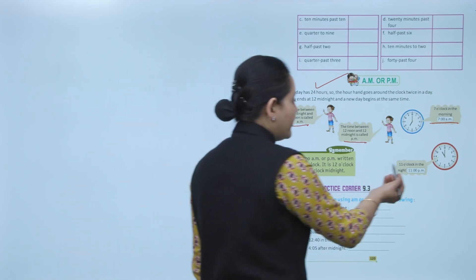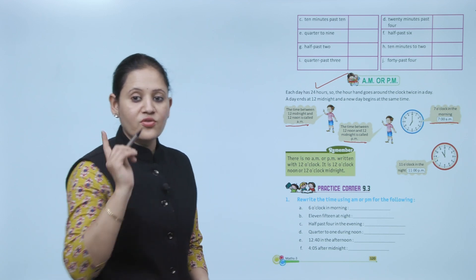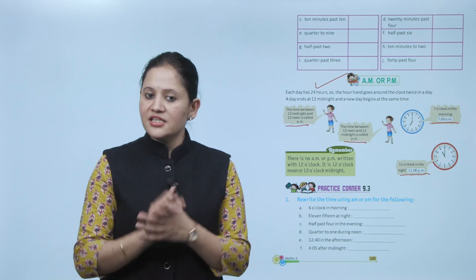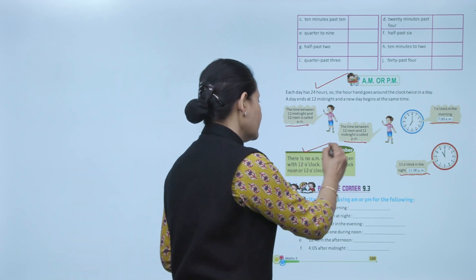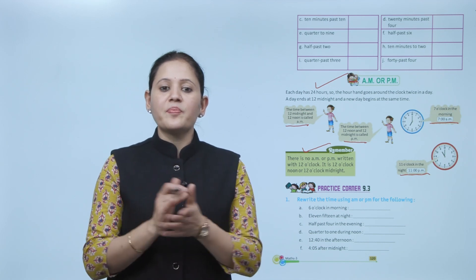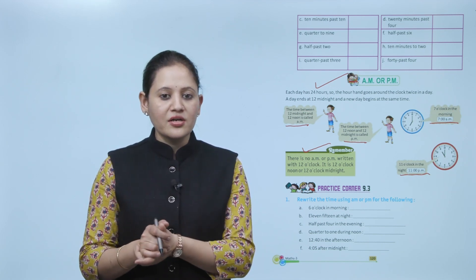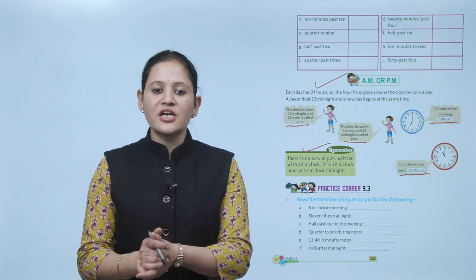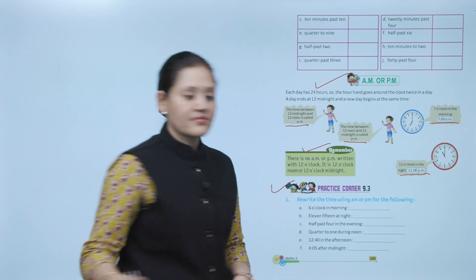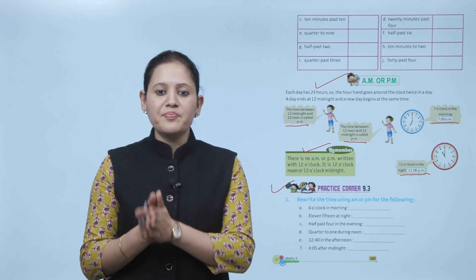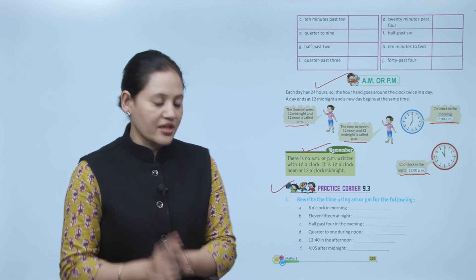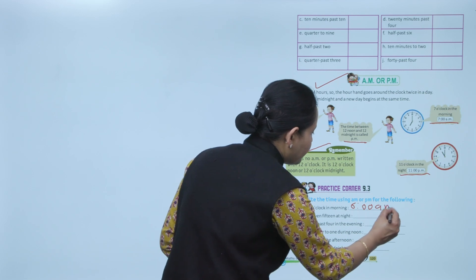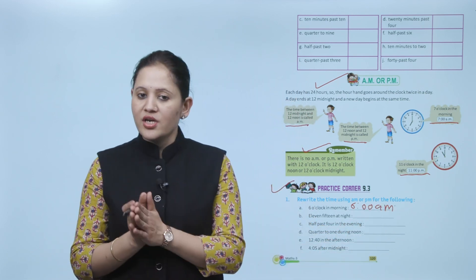11 o'clock at night is written as 11 PM — PM means we are talking about 11 o'clock at night. Remember: there is no AM or PM written with 12 o'clock — it is either 12 o'clock noon or 12 o'clock midnight. Next, Practice Corner 9.3: rewrite the time using AM and PM. 6 o'clock in the morning is written as 6 AM.